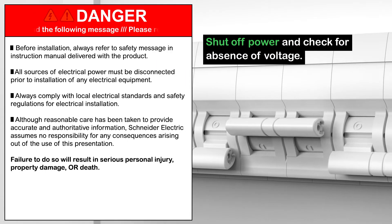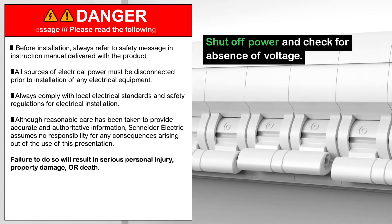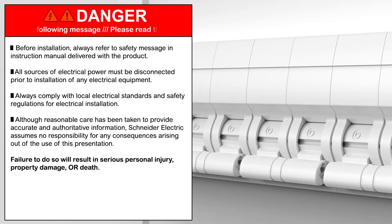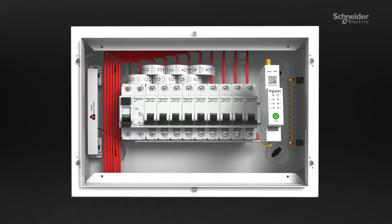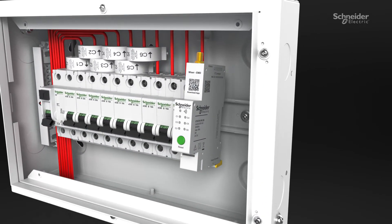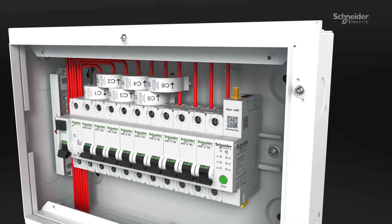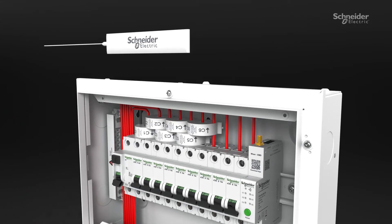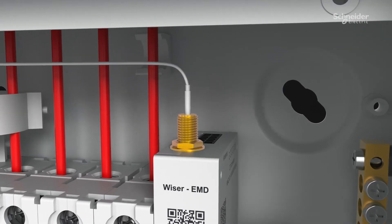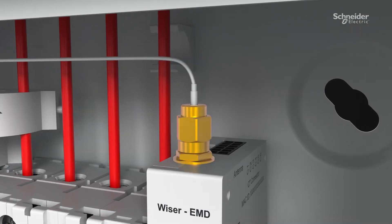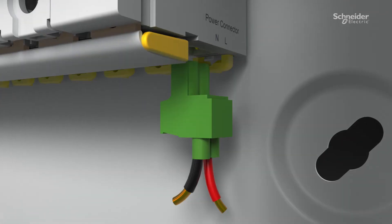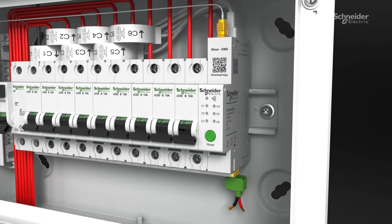Before you begin installation, turn off the power and ensure absence of voltage. Mount the device firmly on the DIN rails. Connect the patch antenna in its terminal, then connect the CT based on CT polarity direction on incomer and loads to be measured.